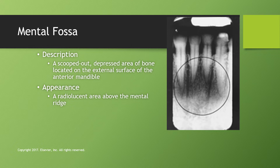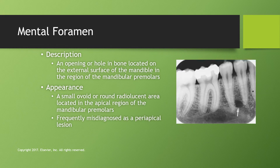The mental fossa is a scooped-out depressed area on the external surface of the anterior mandible, appearing as a radiolucent area above the mental ridge. Above the chin there is a little area that is scooped out — that is the mental fossa. The mental foramen is an opening or hole in bone on the external surface of the mandible in the region of the mandibular premolars. It appears as a small ovoid or round radiolucent area in the apical region of the mandibular premolars.